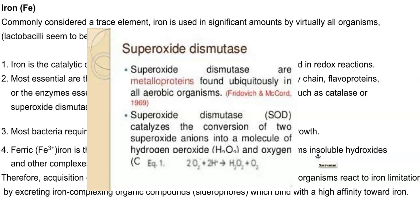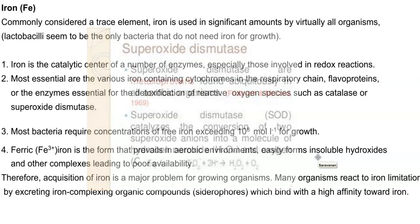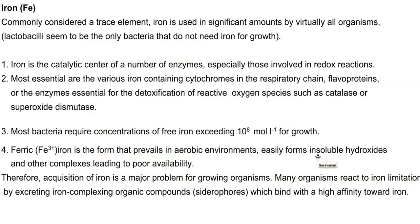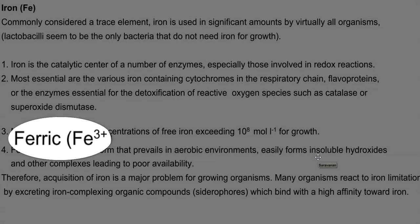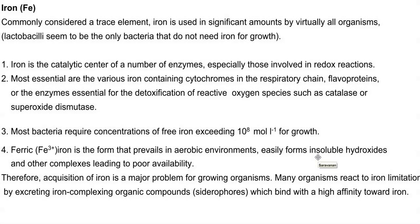These enzymes include catalase and superoxide dismutase. Most bacteria require an iron concentration exceeding 10⁻⁸ mole per liter for their growth. The form of iron available in the environment is ferric (Fe³⁺), mainly in the aerobic environment. This ferric form can easily be converted into insoluble hydroxides or other complexes, leading to poor availability of iron in the environment.